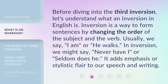Before diving into the third inversion, let's understand what an inversion in English is. Inversion is a way to form sentences by changing the order of the subject and the verb. Usually, we say "I am" or "he walks." In inversion, we might say "never have I" or "seldom does he." It adds emphasis or stylistic flair to our speech and writing.